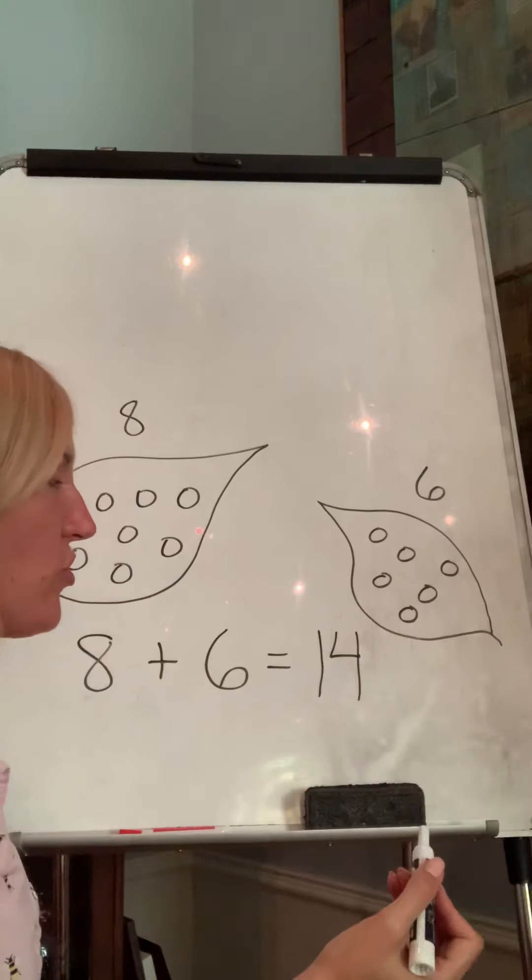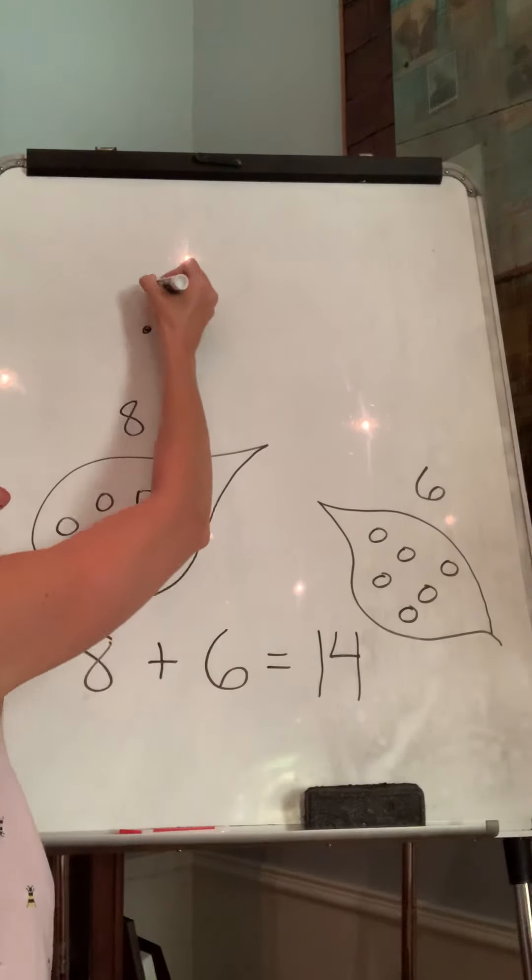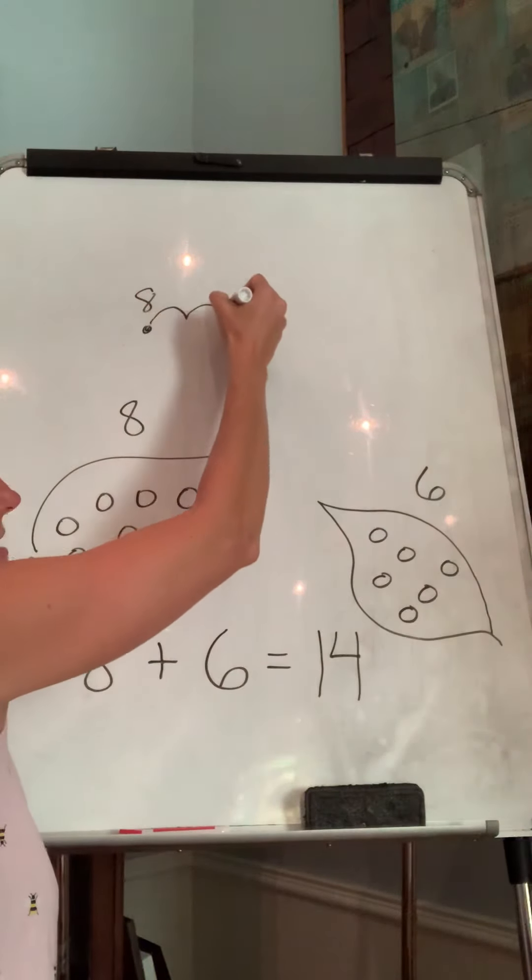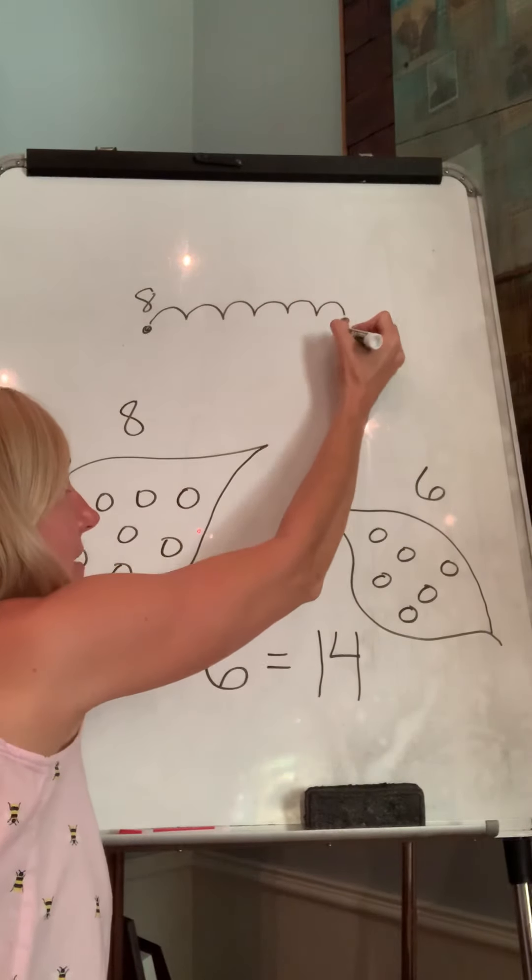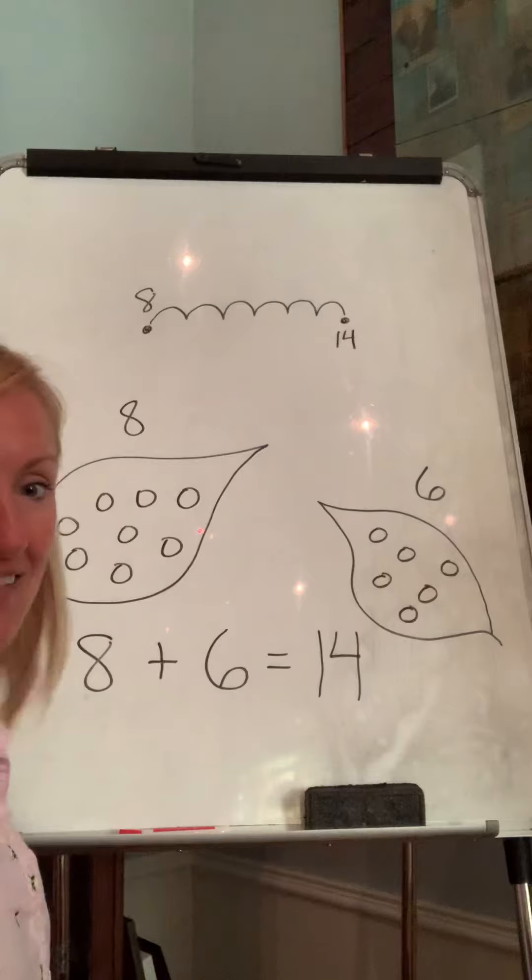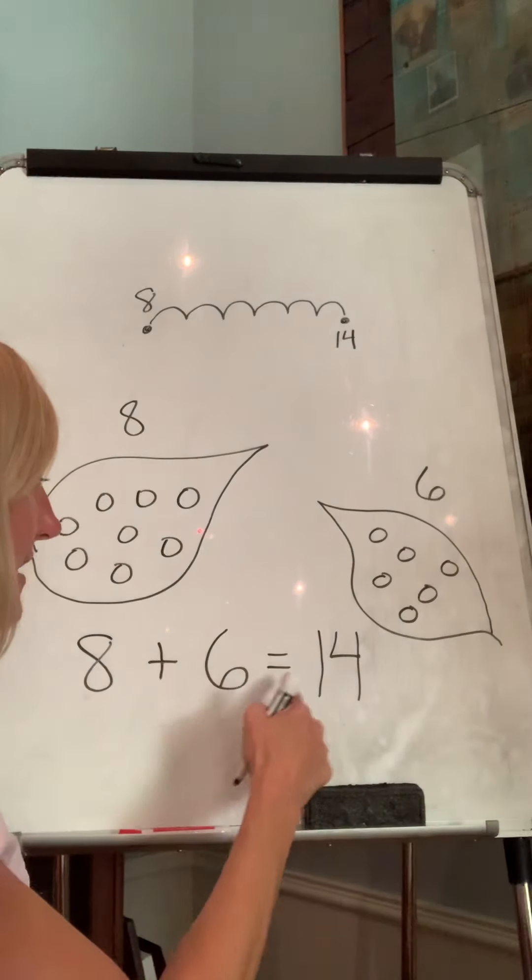And again, you can also use your number line. Start at eight and hop. Nine, 10, 11, 12, 13, 14. Okay. Eight plus six is 14.